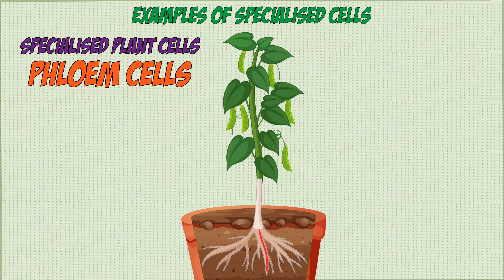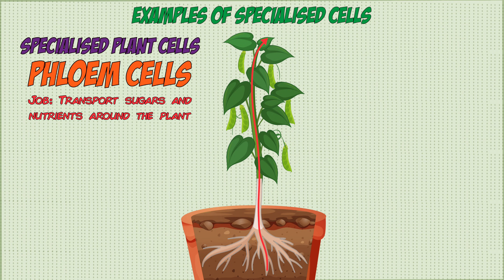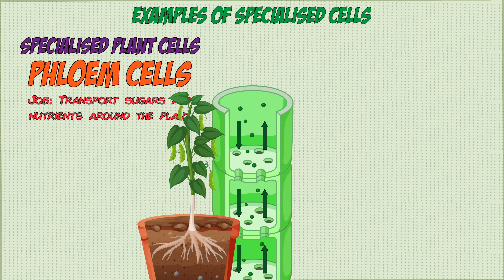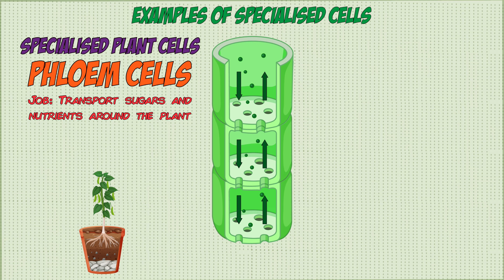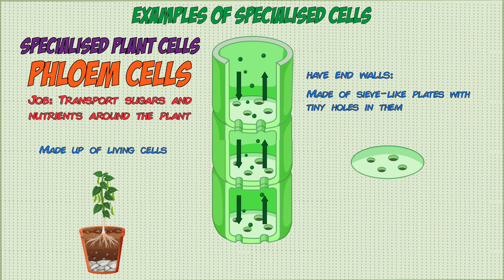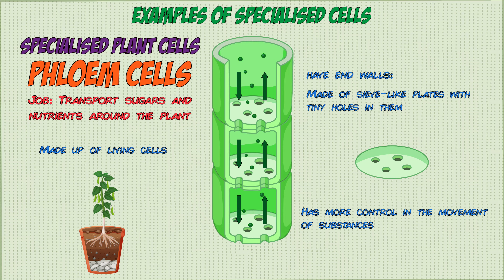Phloem cells form the phloem tube, which is similar to the xylem but is responsible for transporting sugars and nutrients throughout the plant. Unlike xylem, phloem cells are living cells and do have end walls. These end walls are made up of sieve-like plates with tiny holes in them, allowing more control over the movement of different substances. Since the process requires energy, this results in more efficient transport and distribution of nutrients around the plant.